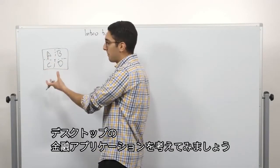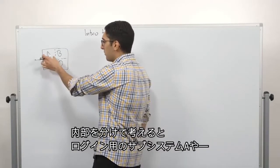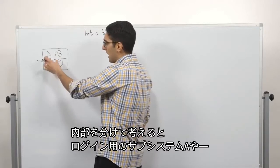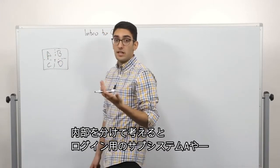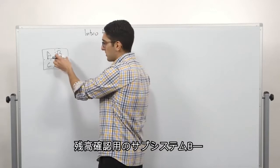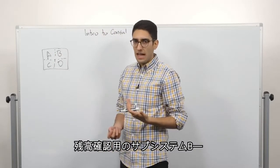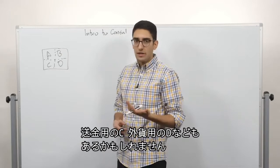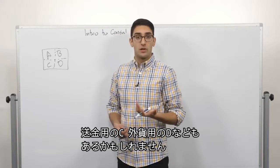suppose we're delivering the desktop banking application. It might have multiple sub-pieces where subsystem A is, let's say, they log into the system. Subsystem B might be showing the balance of our account. C might be wire transfer. D might be foreign currency.